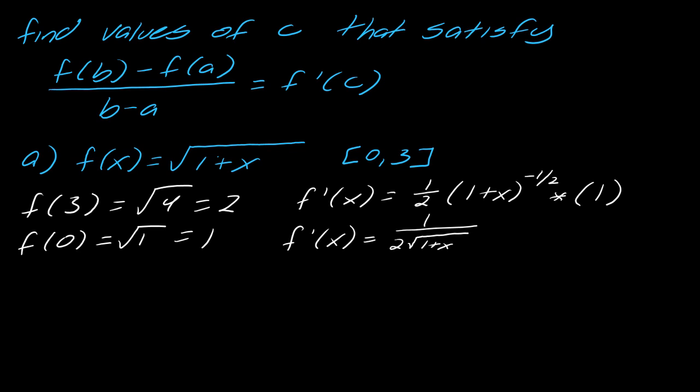Okay, so now I have to find some c where this equals this whole thing. So maybe I'll just start with this side here, so just plugging in those values. So this becomes (2 - 1) over (3 - 0). And then that has to equal f'(c). So right now I just have f'(x), so now I have to plug in c for this. So I get 1 over 2 times the square root of 1 plus c. So now I basically have to solve for c.